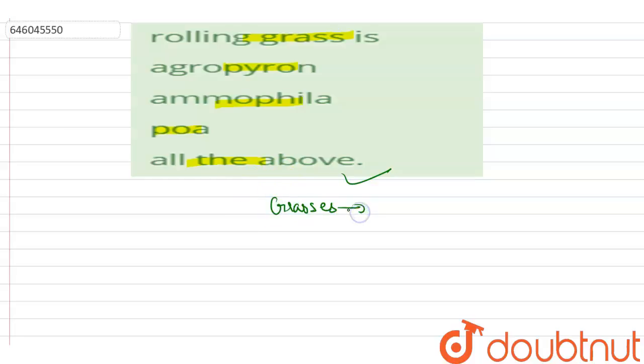The grasses that are used in the making of lawns are called rolling grass or lawn grass. Agropyron, ammophila, and poa are used in making lawns.